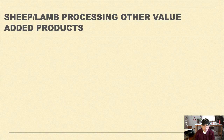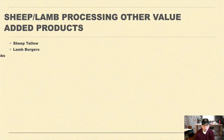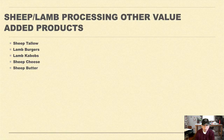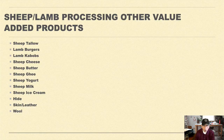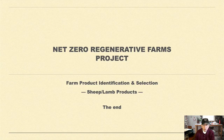The processing other value-added products are sheep tallow, lamb burgers, lamb kebabs, sheep cheese, sheep butter, sheep ghee, sheep yogurt, sheep milk, sheep ice cream, hide, skin and leather, wool, and lanolin. That's basically the end of the sheep and lamb products.